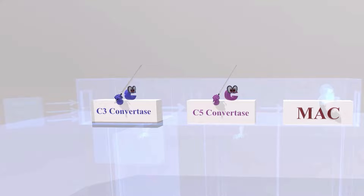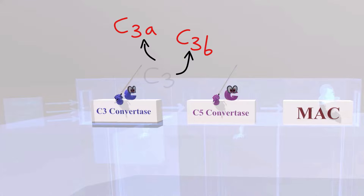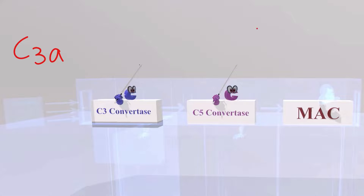C3 convertase and C5 convertase are each responsible for cleaving things — that's why we have the 'C guys' over here with the swords, who will be slicing things. What does C3 convertase cleave? C3 convertase cleaves C3 to produce C3a and C3b. C3a is important for triggering degranulation, and C3b is important for opsonization.